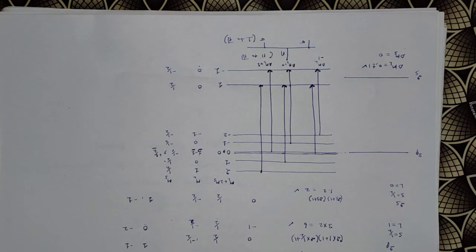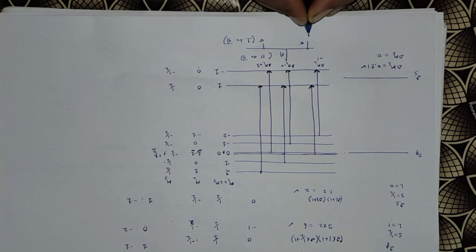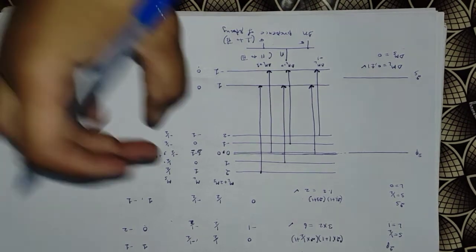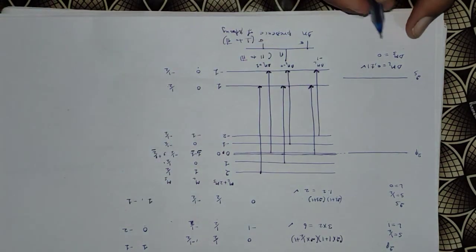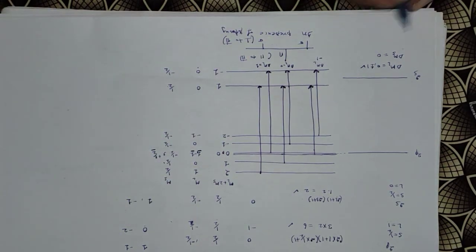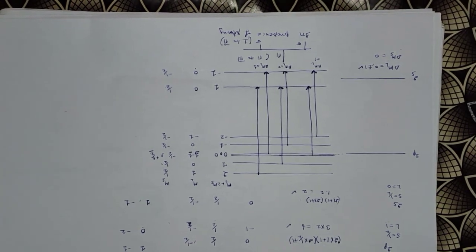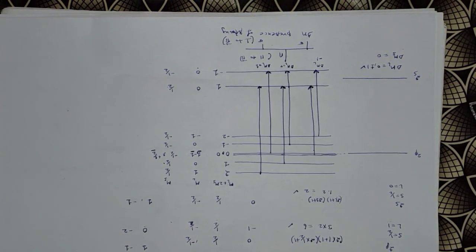In the presence of a strong field — the Paschen-Back effect — the level splits into 6 levels. With selection rules Δml = 0, ±1 and Δms = 0, we get triplet lines. So when the field becomes strong, the anomalous Zeeman effect changes to a normal Zeeman effect, giving a triplet.